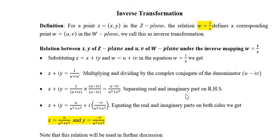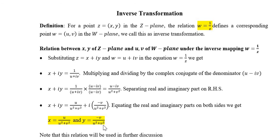Now separating real and imaginary parts on the right hand side, we get x plus iy equal to u upon u square plus v square minus iv upon u square plus v square. Equating the real and imaginary parts on both sides, we get x equal to u upon u square plus v square, and y equal to minus v upon u square plus v square. Note that this relation will be used in further discussion.